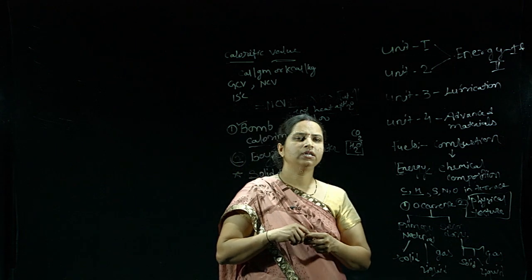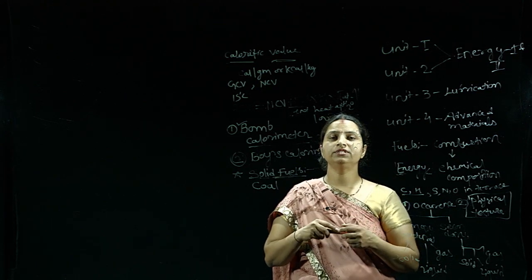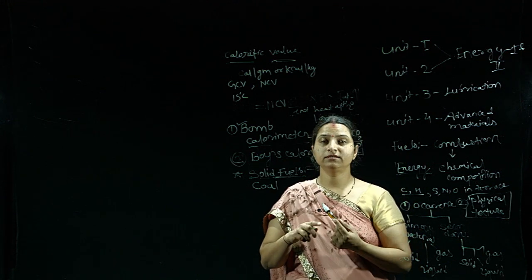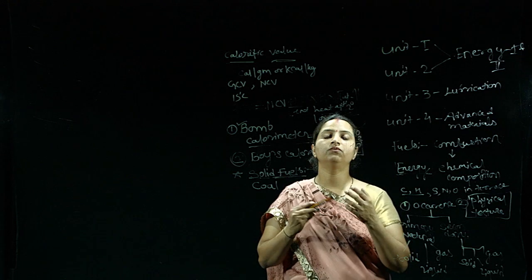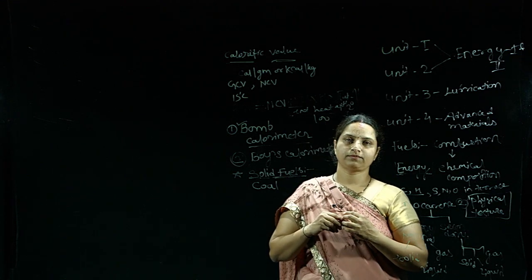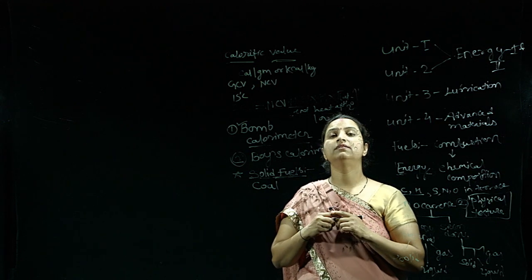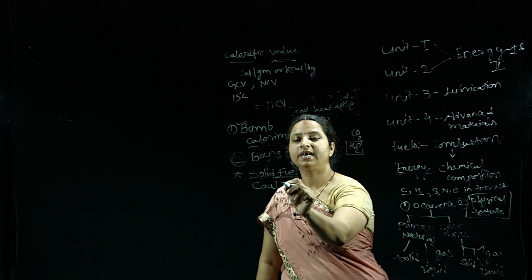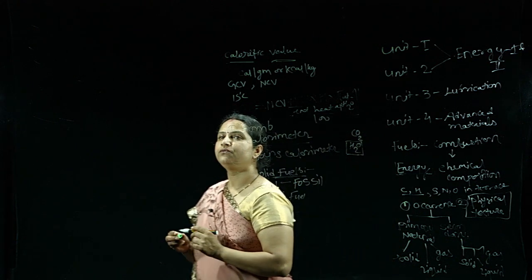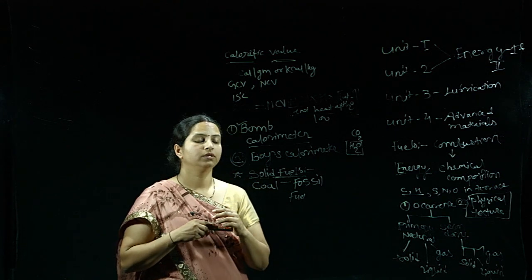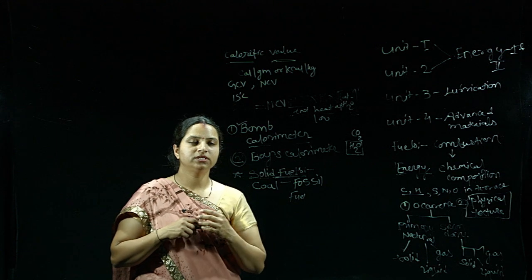From where do we get coal? What is the source of coal? Coal is obtained from below the earth's surface — from the earth's crust. Coal is also known as a fossil fuel. Why is coal known as a fossil fuel?